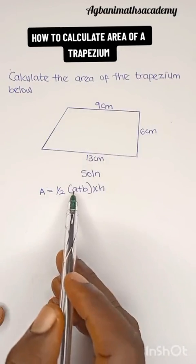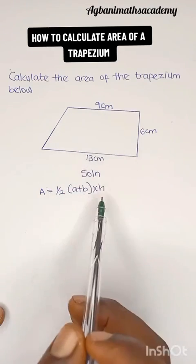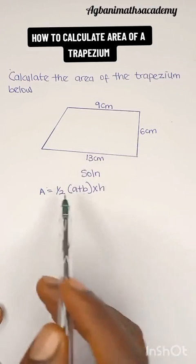So we are given our A in this equation to be 13, we are given our B to be 9, and we are given our H to be 6. So we are going to fill in these values into the equation.